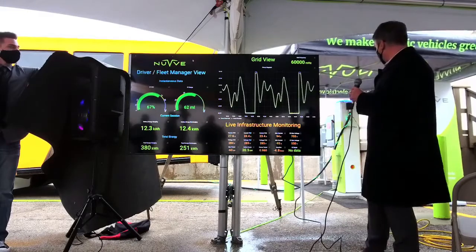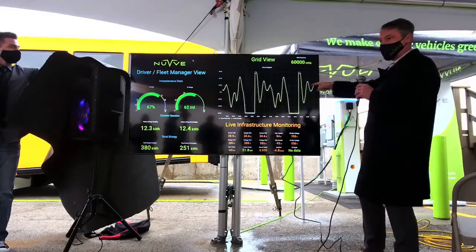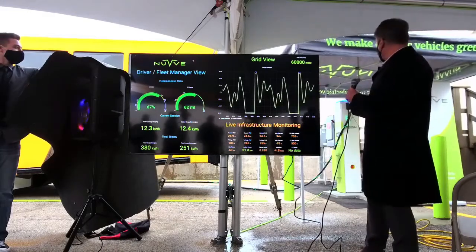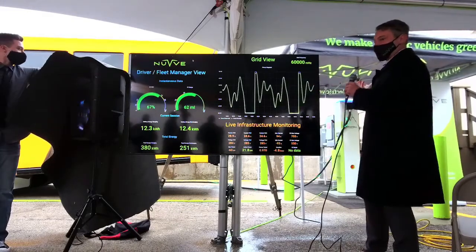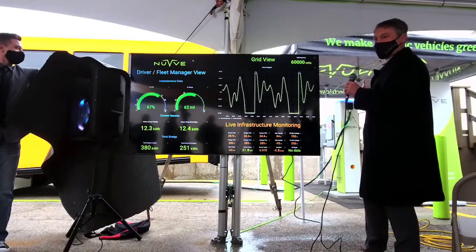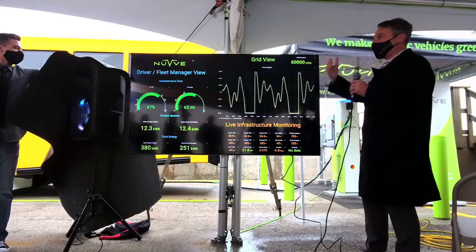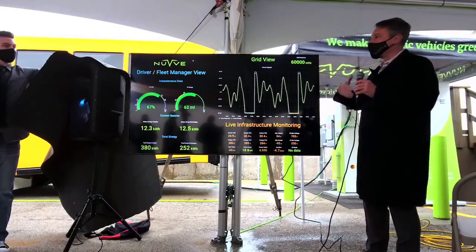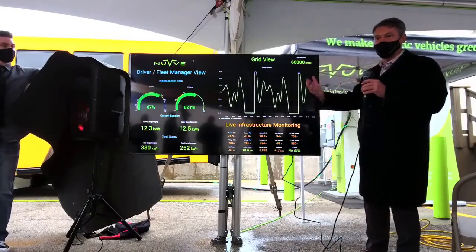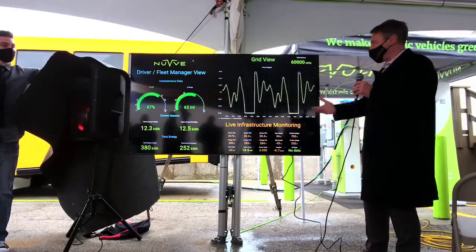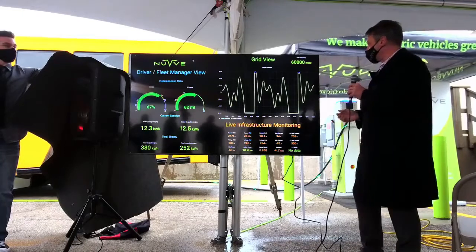You can see the green lights going from the bus to the charging station here — this is showing that the bus is actually discharging. And by the way, while we were talking, we were actually going back and forth: charging, discharging, providing grid services.